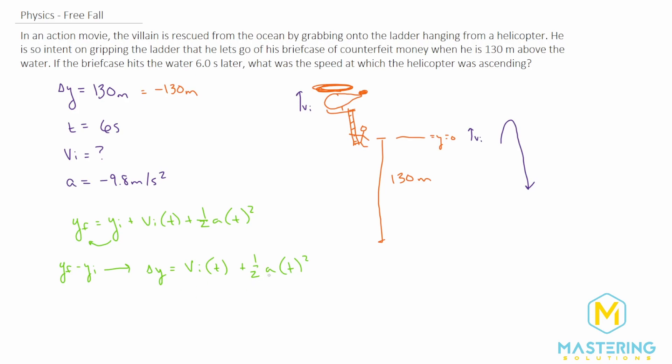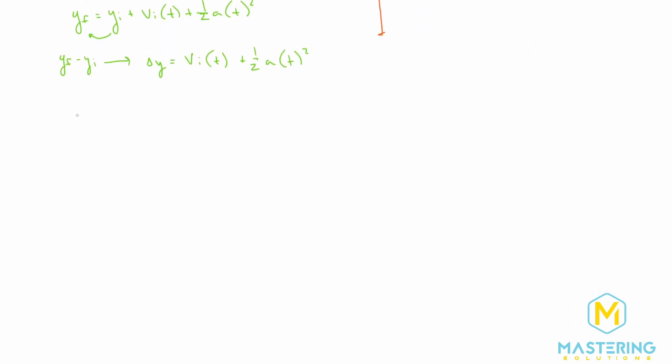so let's subtract over this whole variable here. We have velocity initial times time equals delta Y minus one half acceleration times time squared. And now we can divide both sides by T.